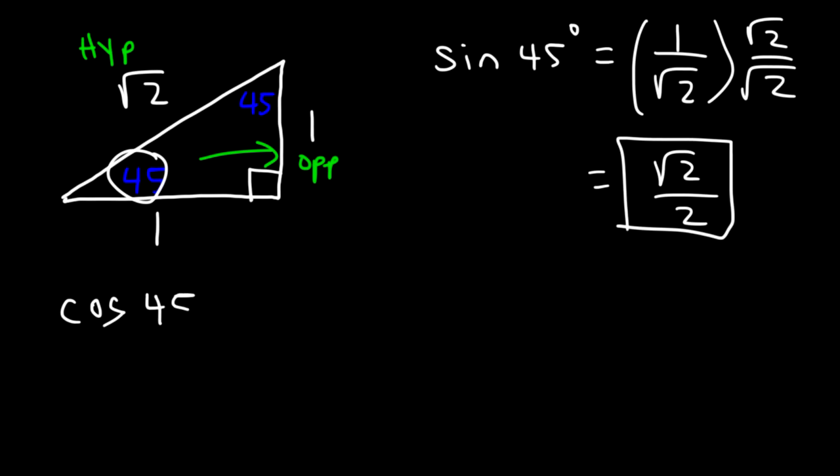If you wish to find cosine of 45, we can do the same thing. It's going to be the adjacent side, which is 1, over the square root of 2, and then after you rationalize it you're gonna get the square root of 2 over 2.